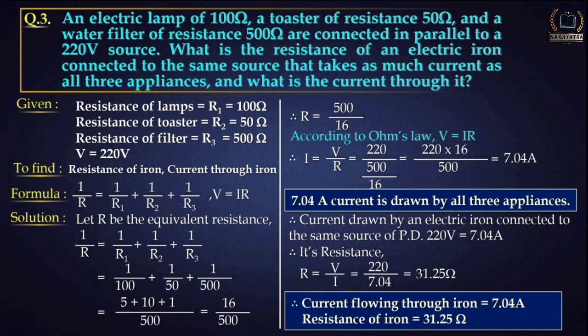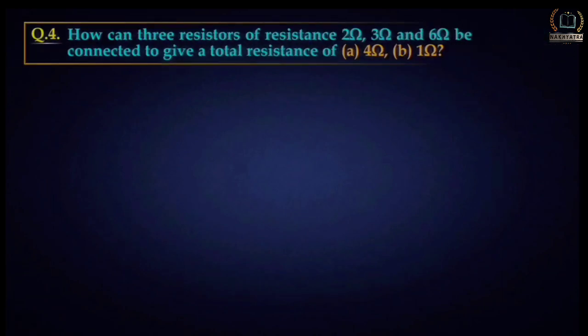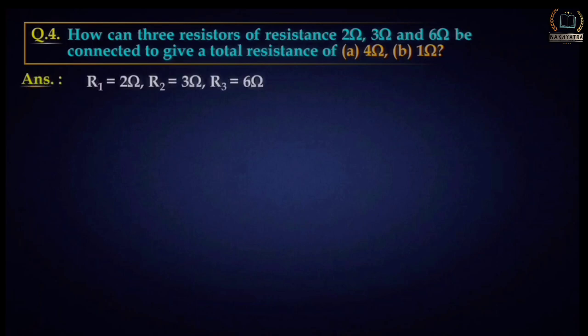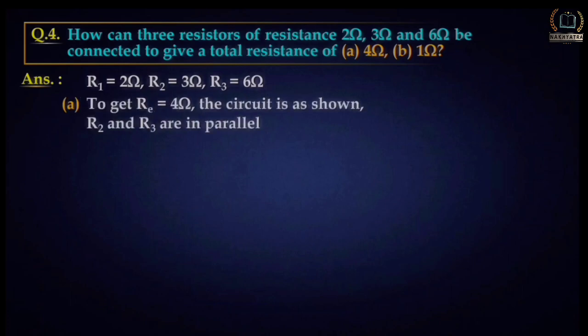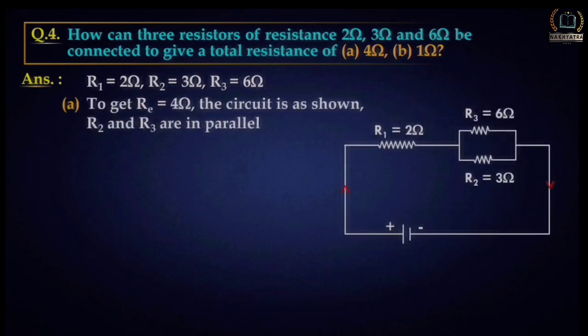Question number four: how can three resistors of 2 ohm, 3 ohm, and 6 ohm be connected to give a total resistance of (a) 4 ohm and (b) 1 ohm? R1 = 2 ohm, R2 = 3 ohm, R3 = 6 ohm. To get 4 ohm, attach the 3 ohm and 6 ohm resistors in parallel.